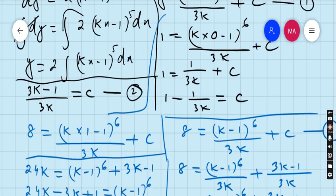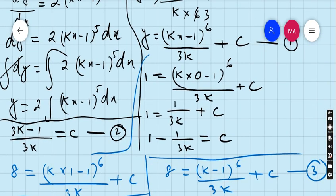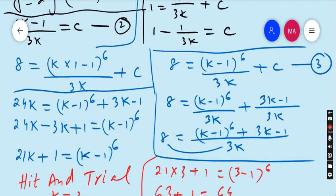Now k=3 and c=8/9. Put in equation number 1. What is equation number 1?